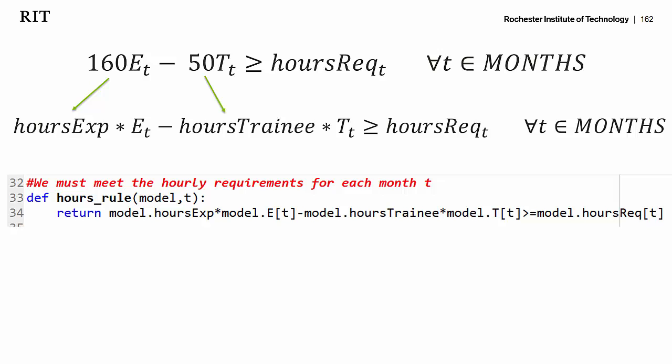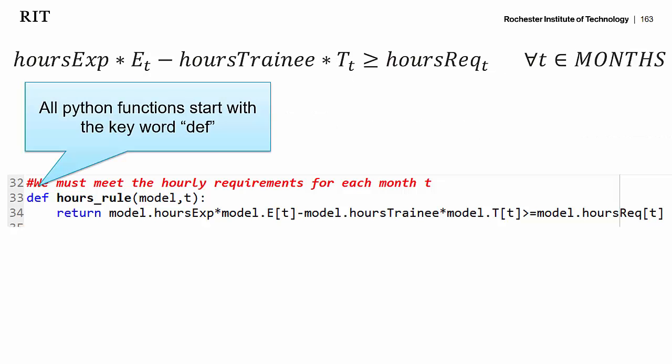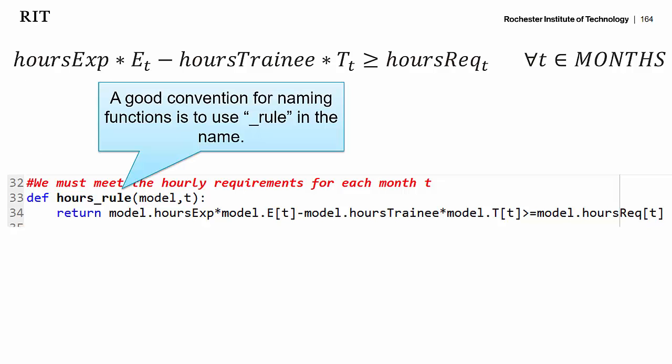Here's what that constraint function will look like in Pyomo. First off, it's a function, so it has to start with the keyword def. Every function also has to be given a name, and all the functions in our Pyomo model that we're using for rules, it's convenient to give them the extension underscore_rule, so we know this is a rule that's going to be used in our objective functions or one of our constraints.